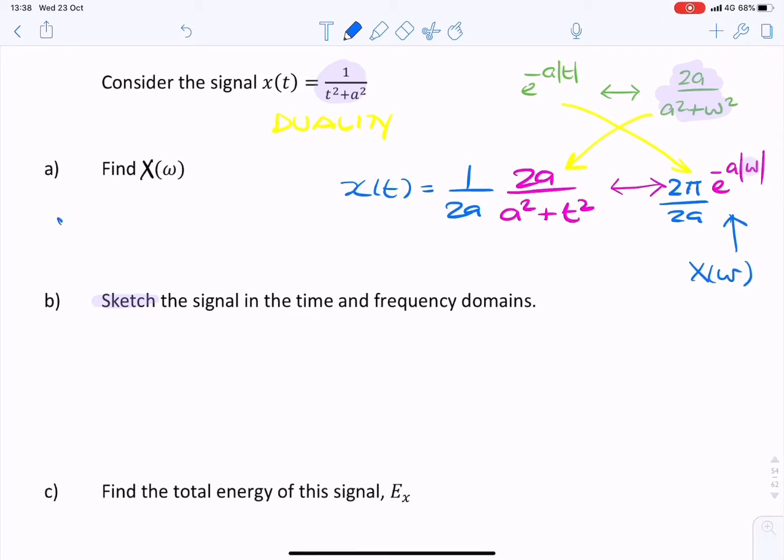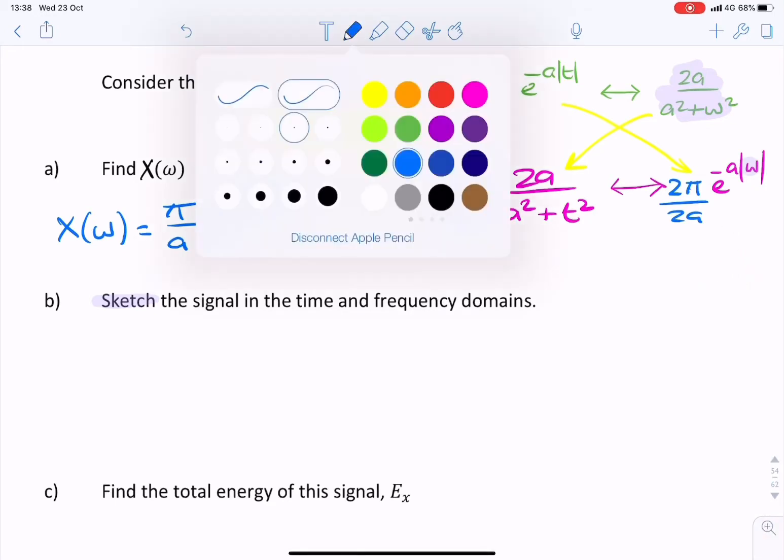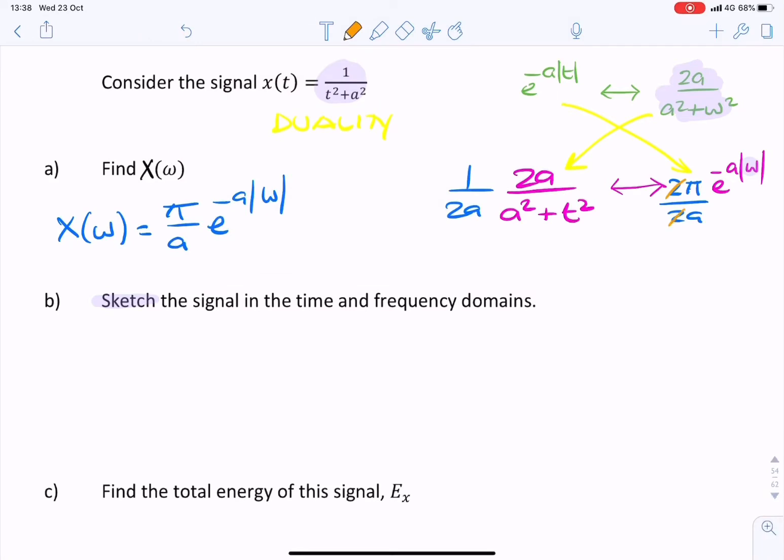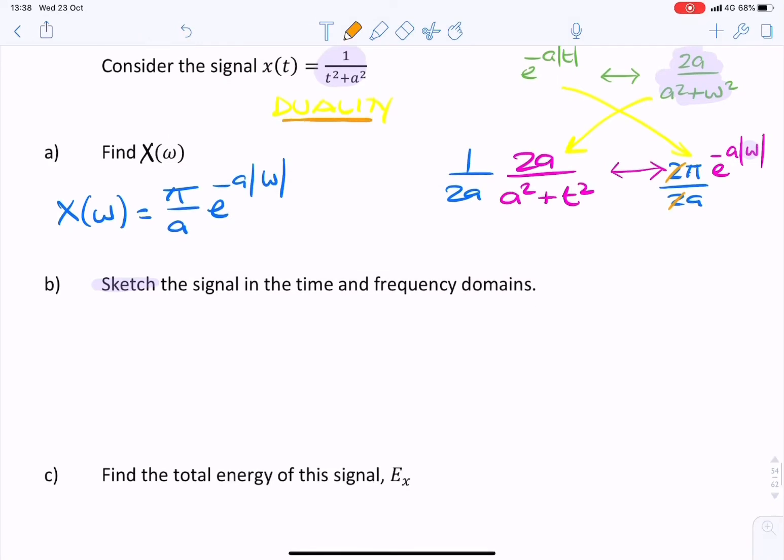So I can say my answer, x(ω), is π over a, e to the minus a ω. And how did we achieve that? We used the duality property. So that was using duality.